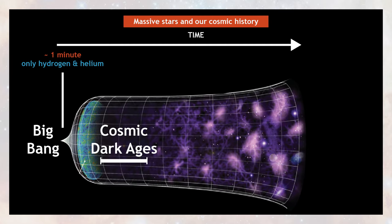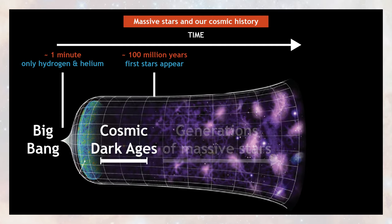After about a hundred million years, the first stars appeared. We think these stars were all very massive. Very quickly, they gave rise to the first supernova explosions. Over time, generations of massive stars kept forming, living short lives and exploding, forming new stars over and over.